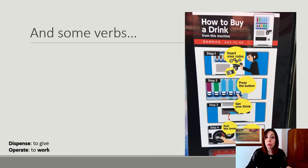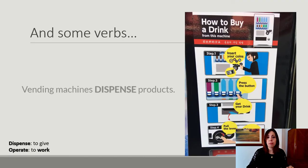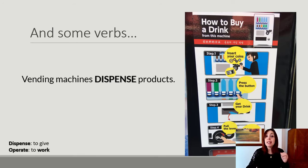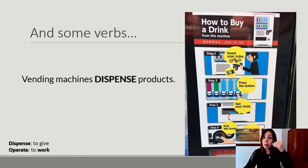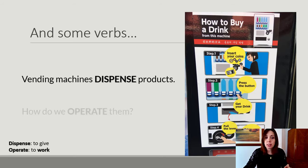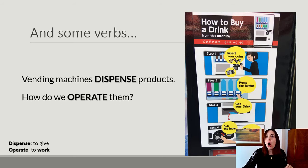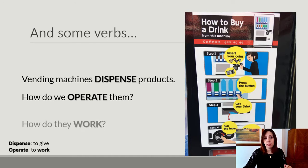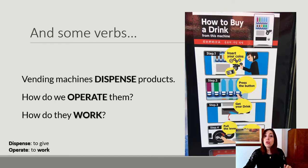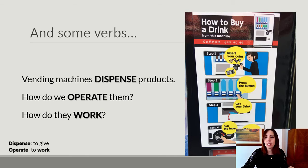Some verbs that we will need to know. Vending machines dispense products — dispense products. And how do they operate? Operate means how do they work? They are synonyms. Operate. Work.